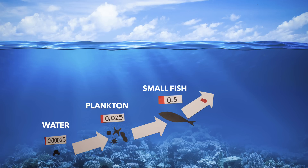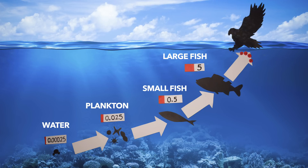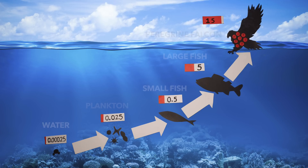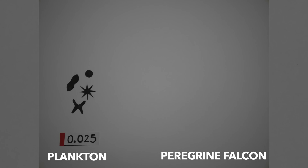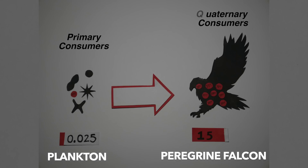Next, a larger fish gobbles up the DDT-contaminated smaller fish, and again the concentration of DDT in the large fish increases to an even greater 5 ppm. The apex predator in this food chain are peregrine falcons, and as these birds consume the contaminated large fish, they accumulate an even larger concentration of DDT — 15 ppm. It is evident that DDT builds up in concentration as the food chain moves from the primary consumers to the quaternary consumers.